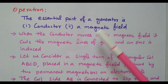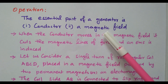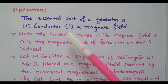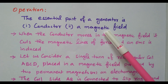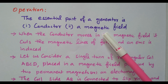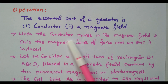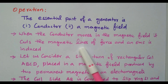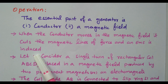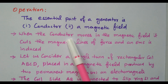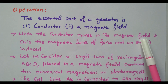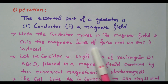The essential parts of a generator are the conductor and the magnetic field. The conductor is nothing but the armature — the rotating part. The magnetic field is available as the stationary part, or field winding. When the conductor moves in the electromagnetic field, it cuts the magnetic lines of force and EMF is induced. This conductor is the armature. When the armature rotates in the magnetic field, it cuts the flux and EMF is induced.